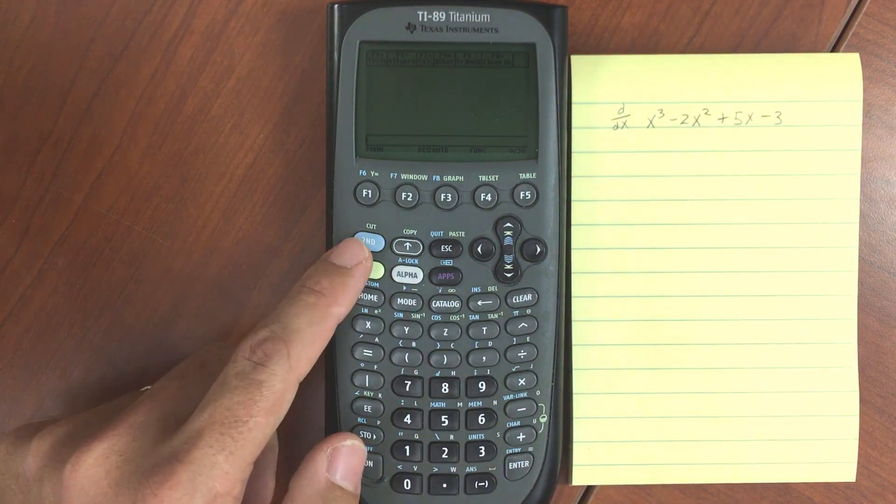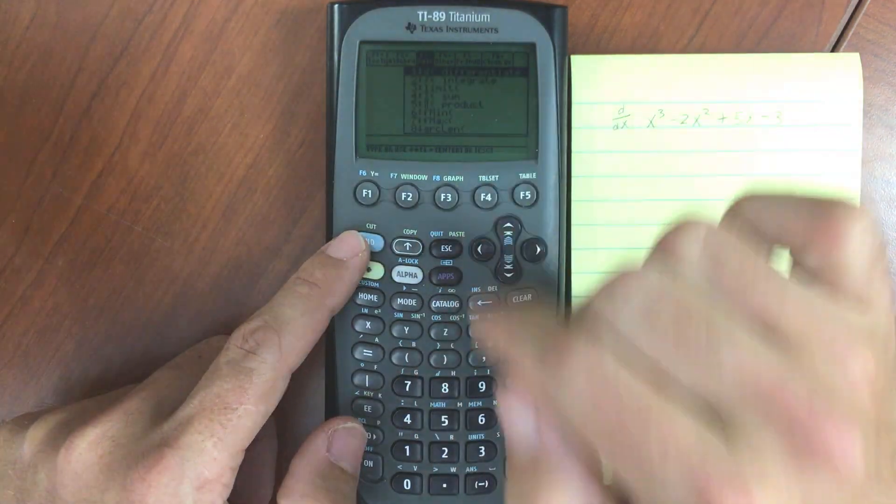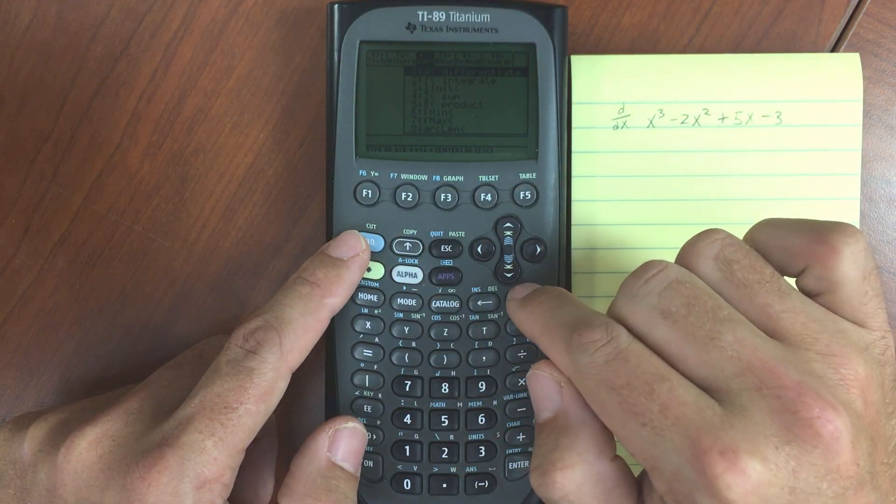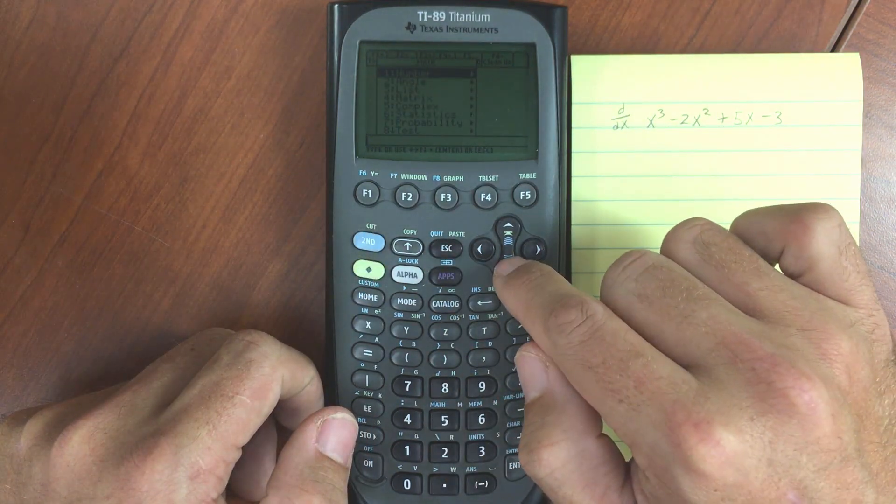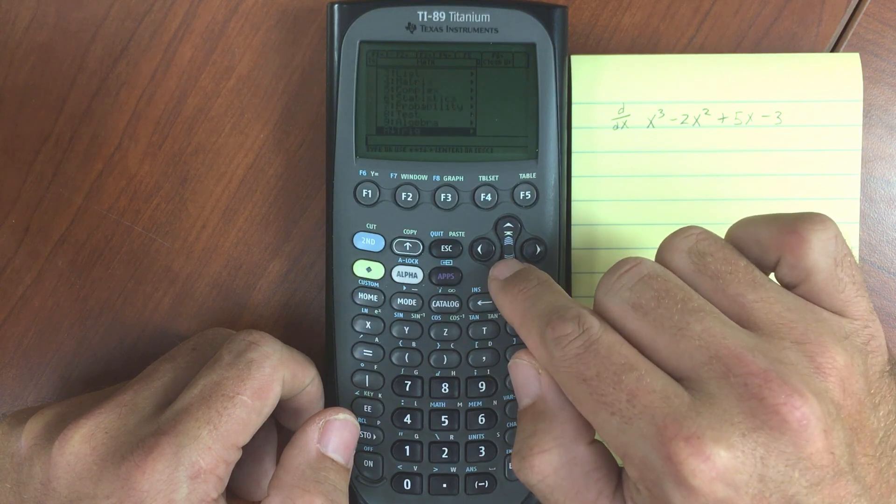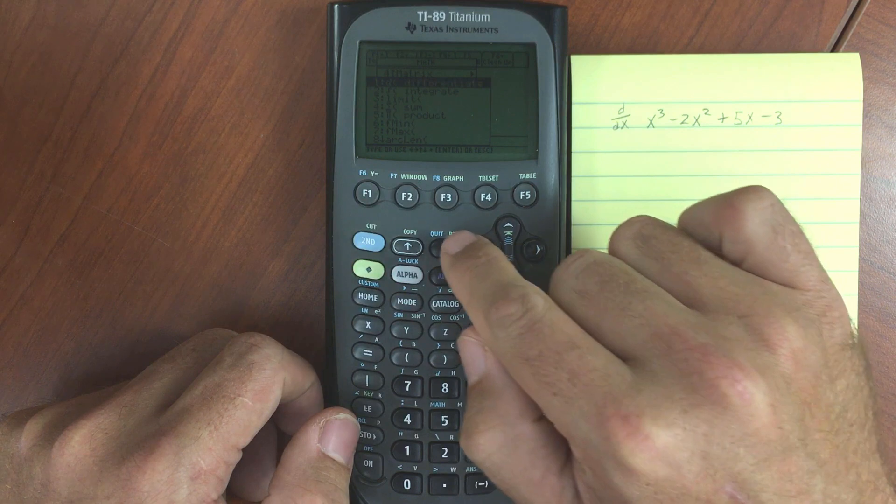There's several ways to get to the calculus operations. You can go to F3 and pick differentiate right there. You can go to the math menu which has a whole bunch of different kinds of math functions in one place. There's the calculus, you can get to differentiate there.